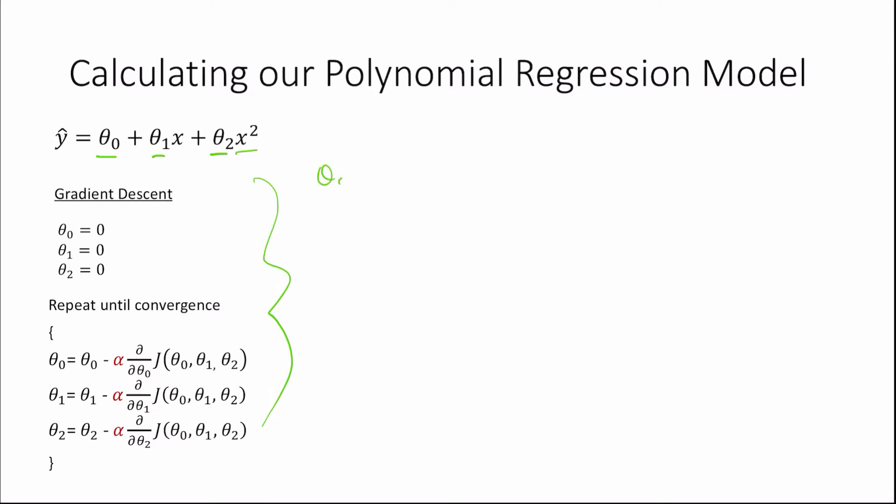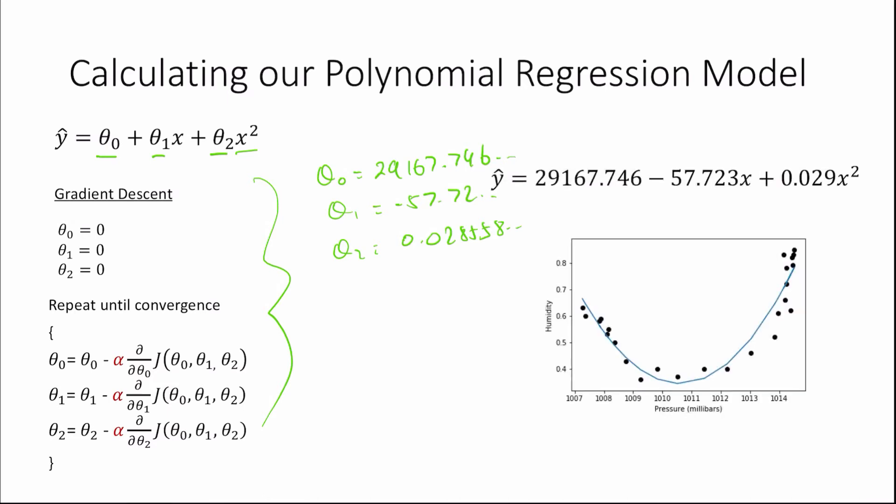we find that theta zero is equal to 29,167.746, and many decimal places after that, and theta two as 0.028558, and so on, giving our final regression model as this. And lastly, if we plot this onto our data, we see that it captures our relationship quite nicely.